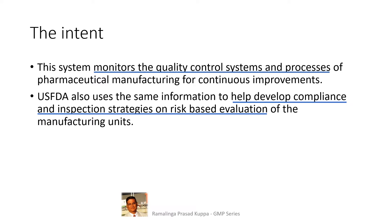USFDA also uses the same information to help develop compliance and inspection strategies on risk-based evaluation of manufacturing units. USFDA uses this information to schedule manufacturing site inspections. If the trends are in compliance, then the agency may consider longer years than usual for inspection of that particular facility. This is also referred to under the risk ranking and filtering tool in the quality risk management guide ICH Q9.